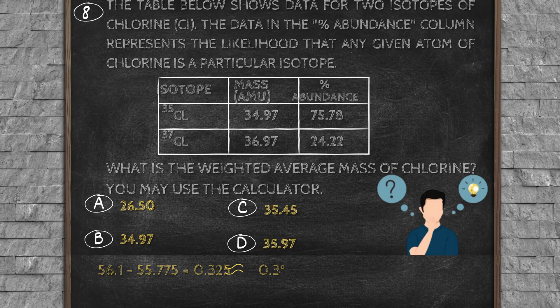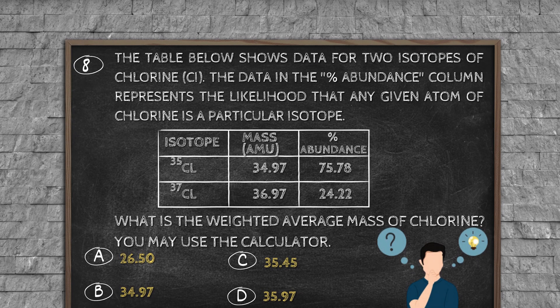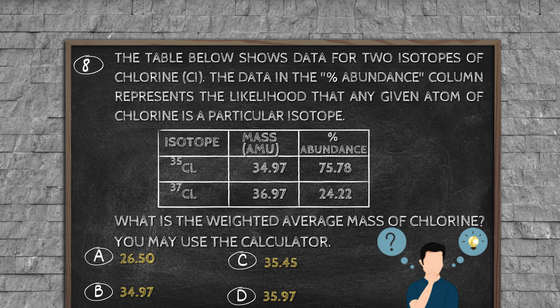Question number 8: The table below shows data for two isotopes of chlorine (Cl). The data in the percent abundance column represents the likelihood that any given atom of chlorine is a particular isotope. Isotope: 35Cl, 37Cl. Mass (AMU): 34.97, 36.97. Percent abundance: 75.78, 24.22. What is the weighted average mass of chlorine? You may use the calculator. Option A: 26.50, option B: 34.97, option C: 35.45, option D: 35.97.